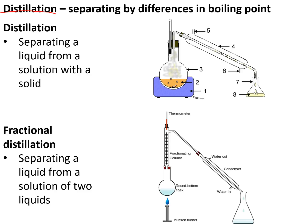Distillation is used to collect the liquid from a solution. You boil the liquid and pass it through a condenser. The condenser has a cold surface to condense the vapours back to a liquid. You collect droplets of liquid as shown.